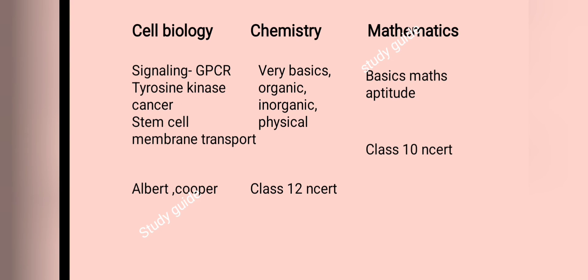In cell biology, questions come from cell signaling — such as GPCR and tyrosine kinase pathways — as well as basic knowledge of cancer cells, cancer stem cells, and stem cells. Membrane transport, including active and passive transport, and membrane structure are also important. You can get this knowledge from Alberts and Cooper, which are the standard books.